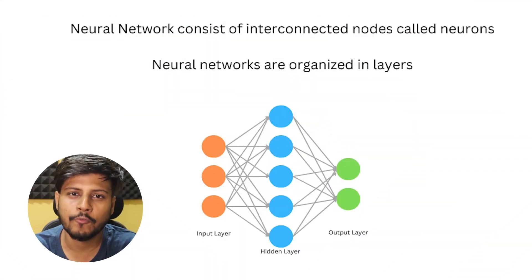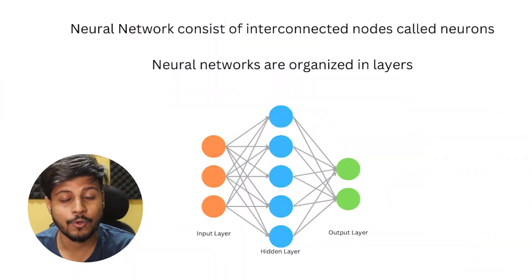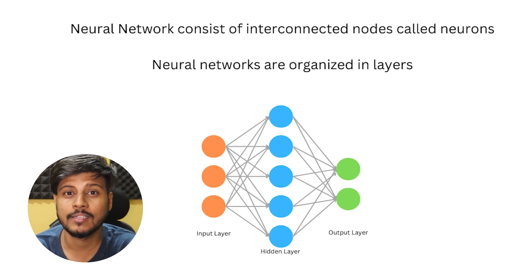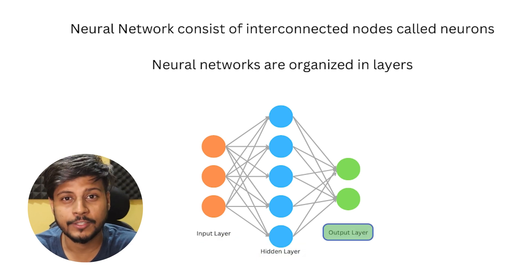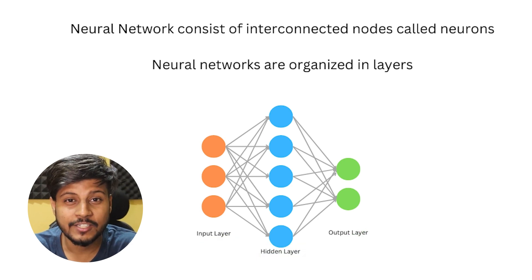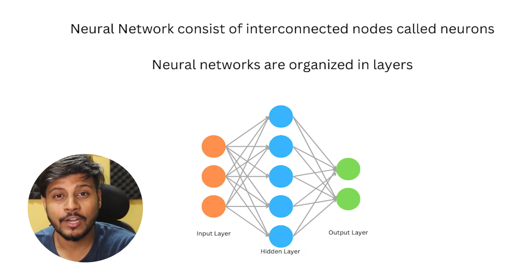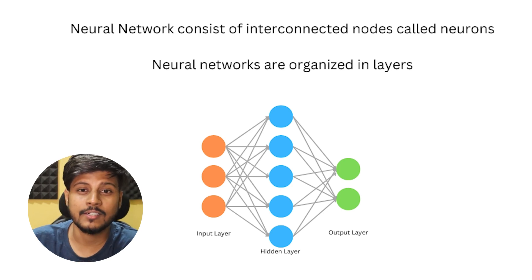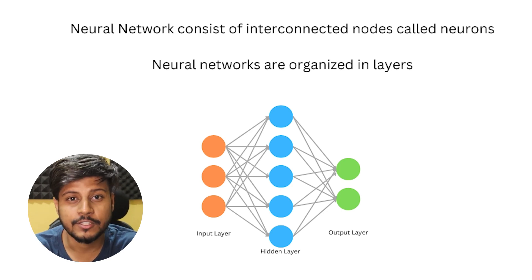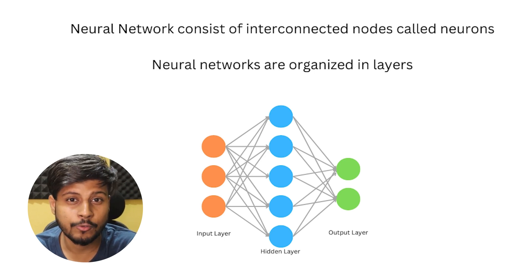We know that a neural network consists of interconnected nodes, also known as neurons, and they are organized into layers. These layers are the input layer, the hidden layer, and the output layer. Each layer in the neural network plays a very important role — they perform certain computations and contribute to the overall ability to learn.